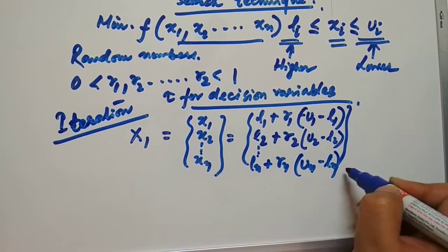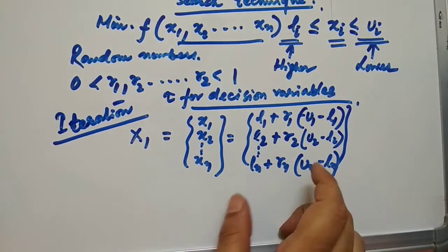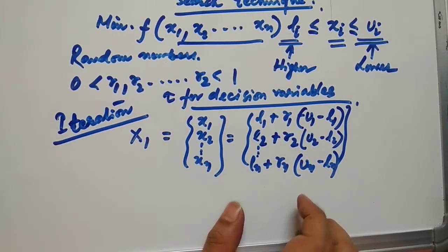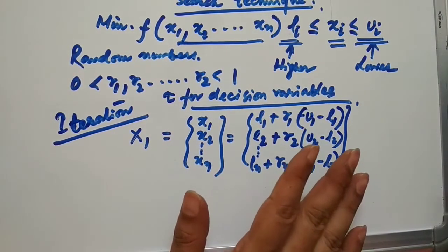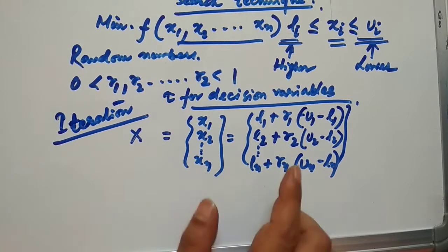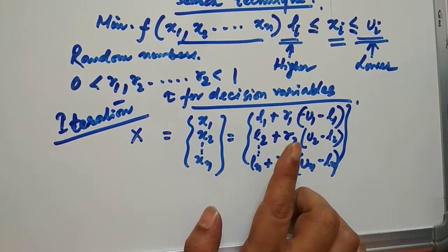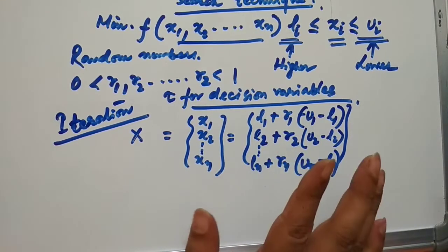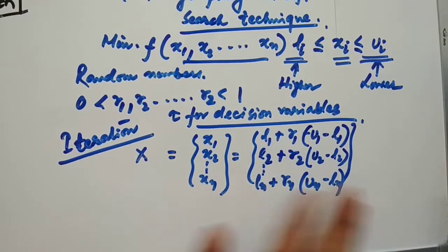By generating a large number of random points x = {x1, x2, ..., xn} and evaluating the value of the objective function at each of these points, we can take the smallest value of f(x) as the desired minimum point, since we have a minimization problem.